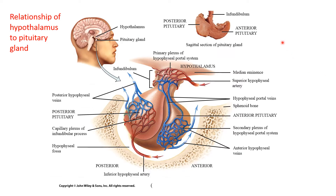It is very important to realize the relation between the hypothalamus and the pituitary gland. The relation between the hypothalamus and the posterior pituitary gland is as follows: there are secretory neurons that send direct axons to the posterior pituitary gland, forming what is known as the hypothalamic hypophysial tract — a neuronal tract. Another way the hypothalamus is connected to the pituitary gland is through the portal system.